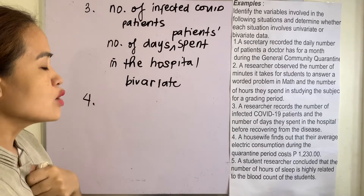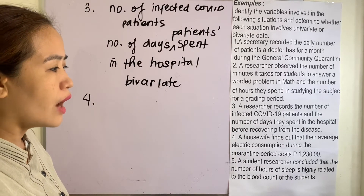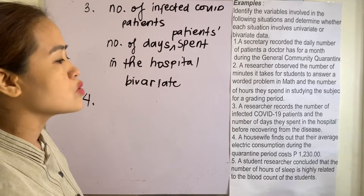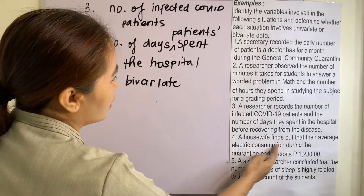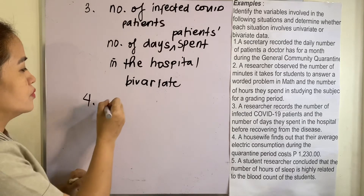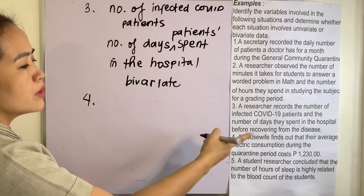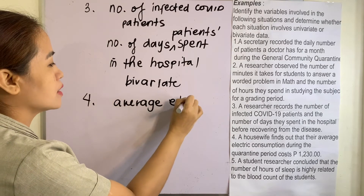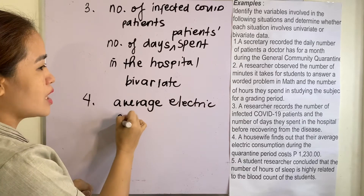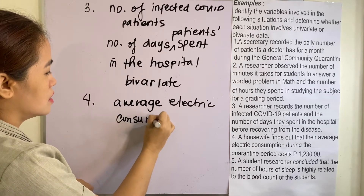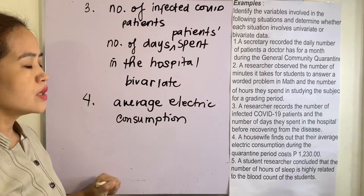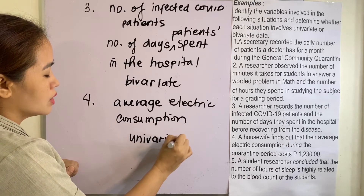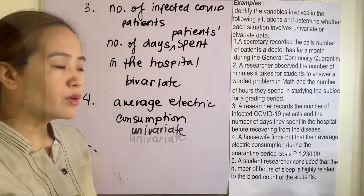Number four: a housewife finds out that their average electric consumption during the quarantine period costs 1,230. There is only one variable here — average electric consumption — so this one is a univariate data, because there is only one variable.